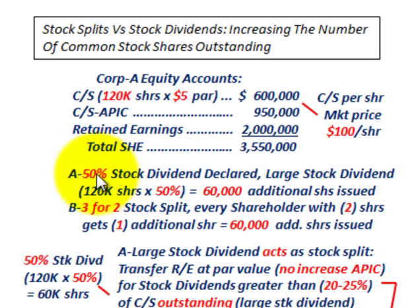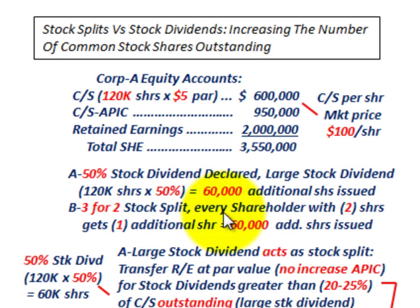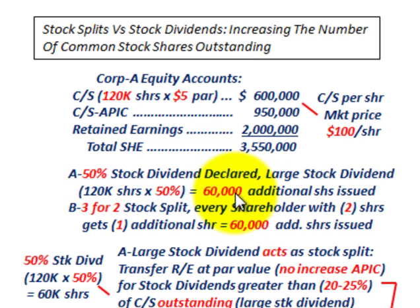We're going to look at two cases, A and B. Case A is a 50% stock dividend, which is considered a large stock dividend. With 120,000 shares outstanding, a 50% dividend equals 60,000 additional shares issued to current stockholders. Case B is a 3-for-2 stock split, which accomplishes the same thing — every shareholder with 2 shares gets 1 additional share, also equating to 60,000 additional shares. So for comparison purposes, we're issuing 60,000 additional shares under both the stock split and the stock dividend.